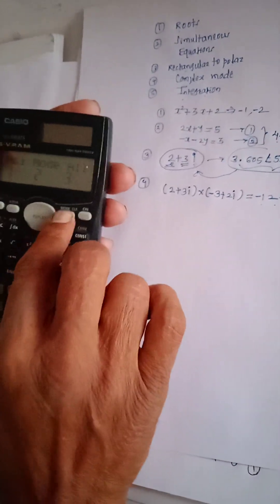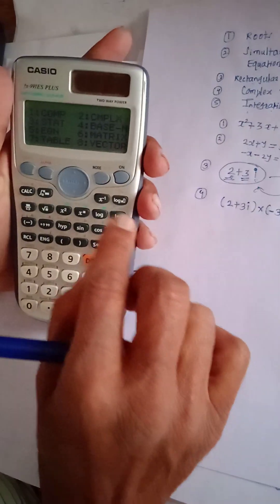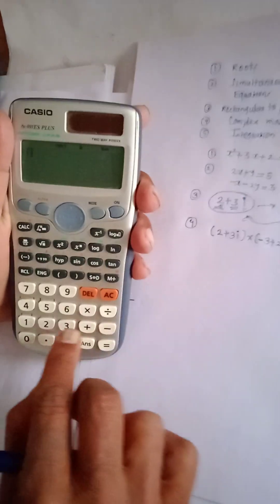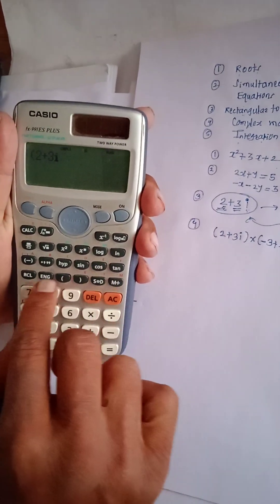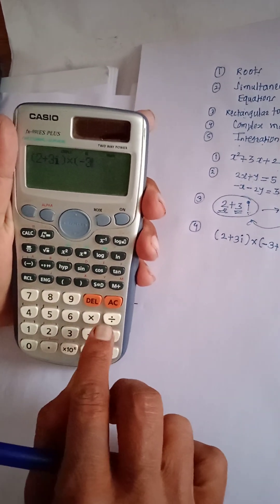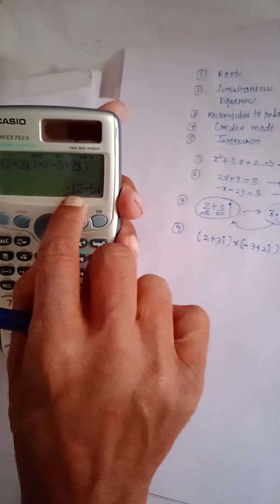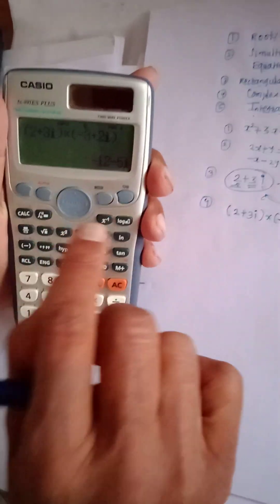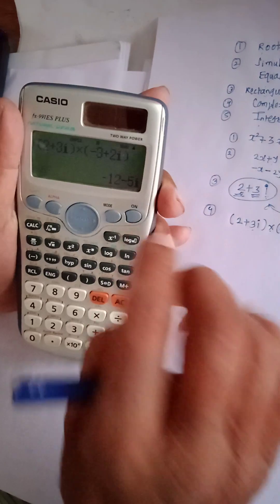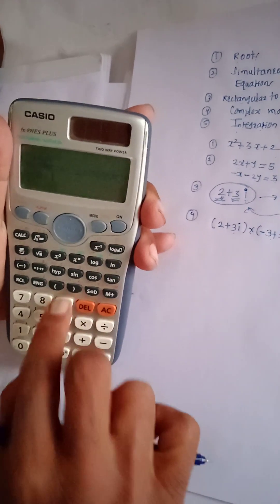Reset the calculator. On the FX-991EX, press Mode and select number 2 for complex mode. Enter the values in brackets: 2 plus 3i, pressing Eng for i. Close the bracket, multiply, open a second bracket, enter minus 3 plus 2i, close the bracket, and press Equals. This calculator directly displays the full answer: minus 12 minus 5i. If you want division, simply change the multiplication sign to division. Reset the calculator after completing these calculations.